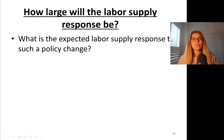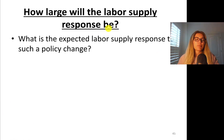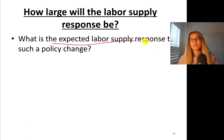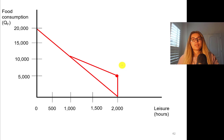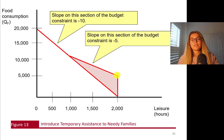Here, we are going to determine how large the labor supply response will be for these kinds of programs. What's the expected labor supply response to such a policy change? The policy change is basically a Temporary Assistance to Needy Families program with a $5,000 benefit guarantee and a 50% benefit reduction rate, making the new budget line a kinked budget line.